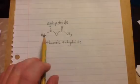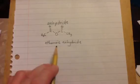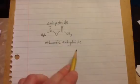And we're just counting the carbons on each side one two and also one two. Ethan adding the oic, ethanoic anhydride.